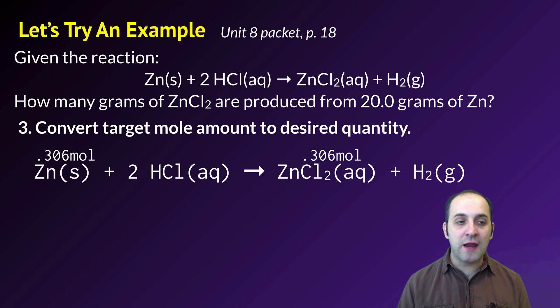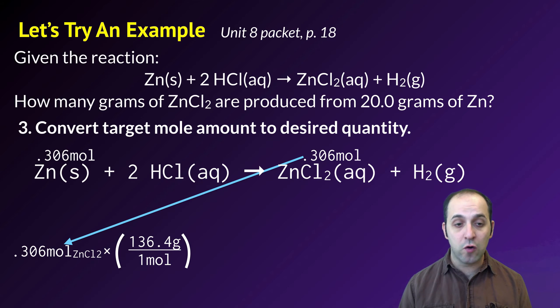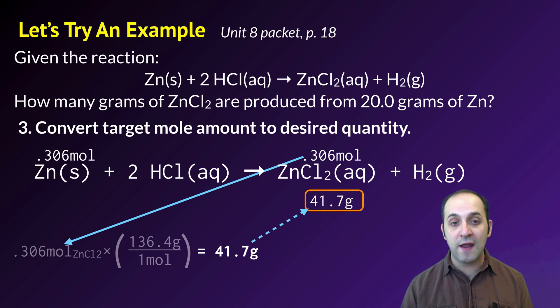Once that's done, I can go to step three and convert the target mole amount to the desired quantity. I'm going to take 0.306 moles of zinc chloride and I'm going to convert that to mass by multiplying it by 136.4 grams, which is the gram formula mass of zinc chloride. That's going to give me a final mass of 41.7 grams. That's how many grams of zinc chloride I should expect will be produced from 20 grams of zinc. Does that make sense? If it doesn't, take a moment and write down any questions that you have before we move on.